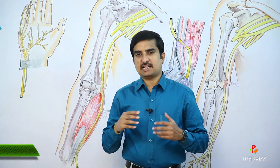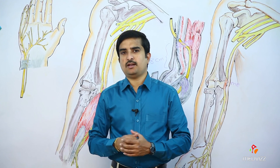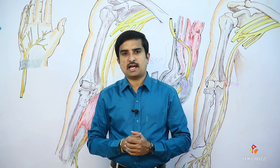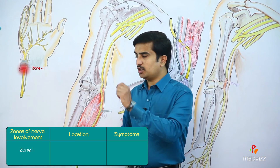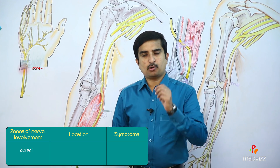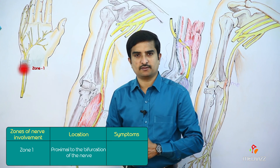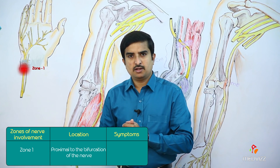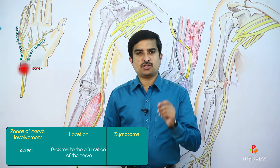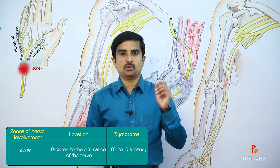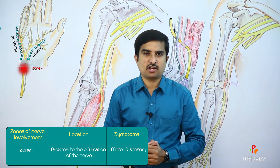Depending upon clinical presentation, ulnar nerve injury in the Guyon's Canal has been divided into 3 zones. In Zone 1, the injury is exactly proximal to the bifurcation of the nerve. Because of this, both the deep branch as well as sensory branches are involved, which in turn causes both motor and sensory loss. Zone 1 causes motor and sensory loss because the injury is proximal to the bifurcation of the nerve.